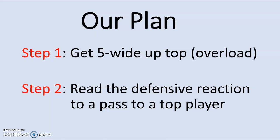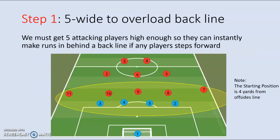Our plan is to overload the guys up top and then see what they do. Why must we create an overload? If we don't have players up top near the back line, then when they jump there's no one that's going to make the through run. So if we have a lot of guys up top — if we're playing five wide and someone jumps and steps up — we have guys there that immediately can run into the open space and hurt them. So: get five wide, read the defensive reaction.